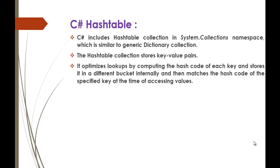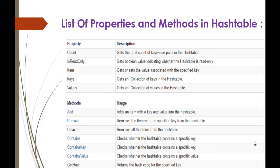Without wasting much time, let's look at the properties and methods present in Hashtable. Properties include: Count, Item, Keys, Values, and IsReadOnly. Methods include: Add, Remove, Clear, Contains, ContainsKey, ContainsValue, and GetHash. Now let's write a program using these methods for Hashtable.